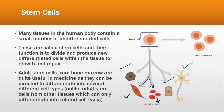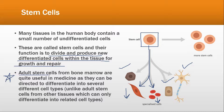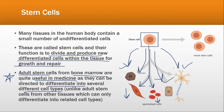Their function is to divide and produce new differentiated cells within the tissue for growth and repair. For example, adult stem cells from bone marrow are quite useful in medicine as they can be directed to differentiate into several different cell types. These stem cells can further divide by mitosis, producing more and more stem cells of the same kind.